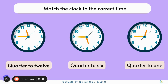Let's try some questions. The first one on the left: the minute hand is at 9, therefore it's going to be quarter to, and the hour hand is between 11 and 12. Since it's moving towards 12, the time will be quarter to 12. The clock in the middle: the minute hand is at 9, and the hour hand is moving to 6, therefore the time is quarter to 6. The last clock on the right — give it a try first — but the answer will be quarter to 1, with the minute hand pointing at 9 and the hour hand moving towards 1.